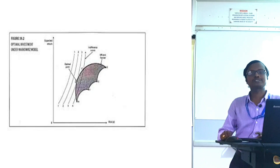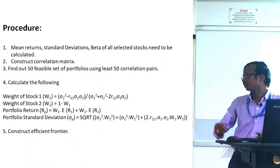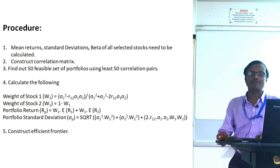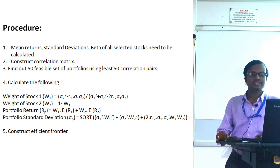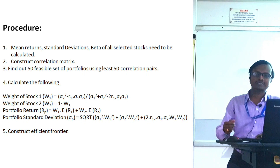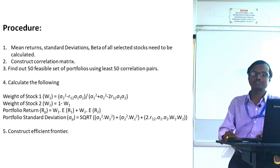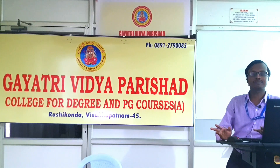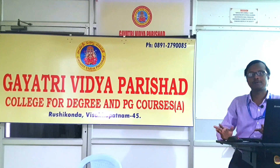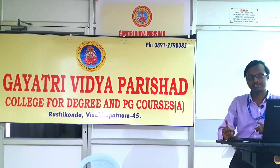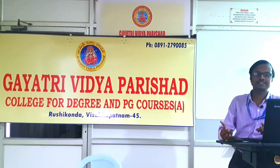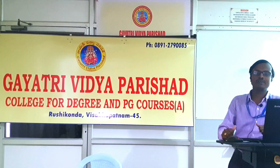The broad steps involved in applying the Markowitz portfolio model are as follows. Step one: identify mean return, standard deviation, and beta of all stocks. Step two: construct a correlation matrix. Before constructing the portfolio, we must ensure two conditions — the stock should not have a negative beta (which indicates systematic risk), and it should not have a negative return.